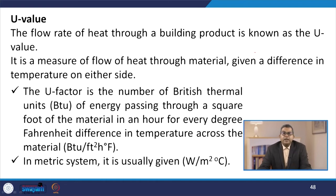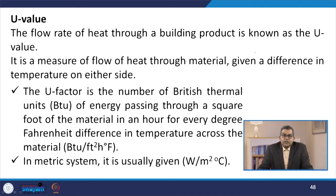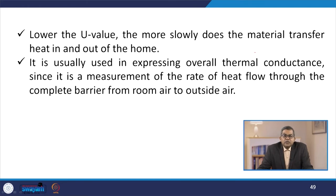The U value is the flow rate of heat through a building product — a measure of flow of heat through a material given a different temperature on either side. The U factor is the number of BTU of energy passing through a square foot of material in an hour for every degree Fahrenheit difference in temperature across the material (BTU per ft²·hr·°F). In the metric system, it is given as W/m²·°C. A lower U value means the material transfers heat more slowly into and out of the home.